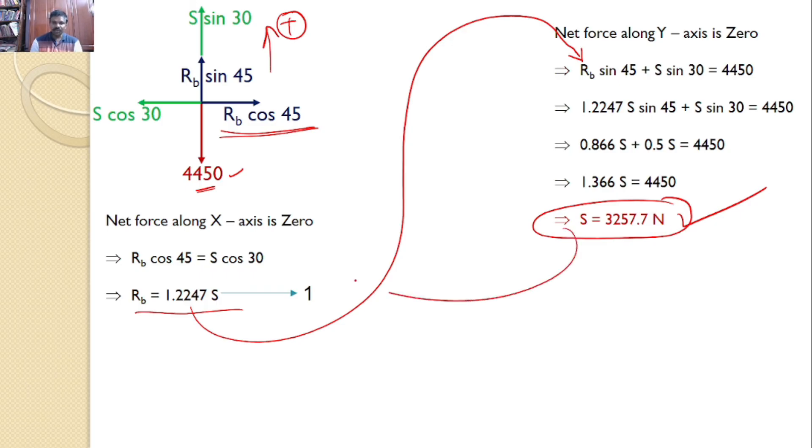And you can substitute this S value to get the value of Rb. So from equation 1, Rb is equal to 1.2247 S. Upon substituting you will get the value of Rb as 3989.7 Newtons. Hence S is equal to 3257.7 Newtons and Rb is equal to 3989.7 Newtons are the answers for this problem.